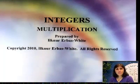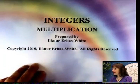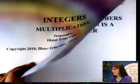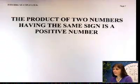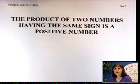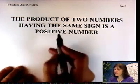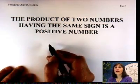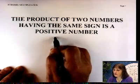We'll talk about multiplication of integers and see how they work with signed numbers. The first thing is the product of two numbers having the same sign is a positive number. First of all, let's look at how we can write a product. Let's say 2 times 3.